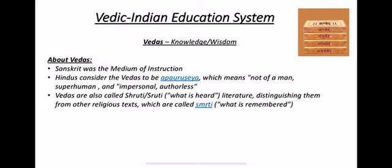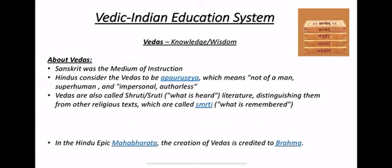This is why Vedas are distinguished from other religious texts, which are called 'Smriti.' For example, if I explain something to you verbally and don't write it down, what you heard from me is 'Shruti.' Afterward, whatever you remembered and wrote down is called 'Smriti' — meaning what your mind retained and you recorded.